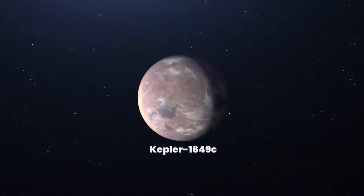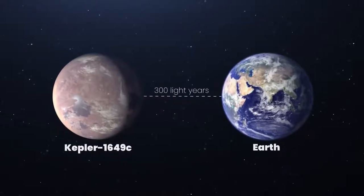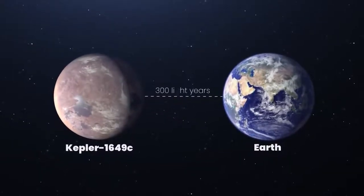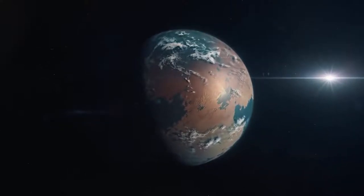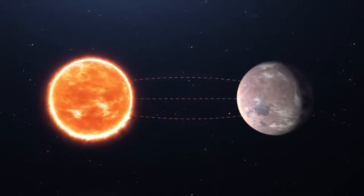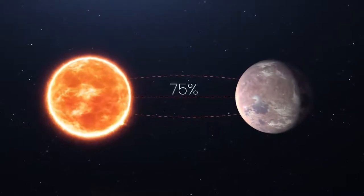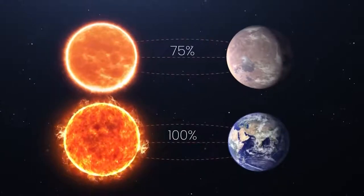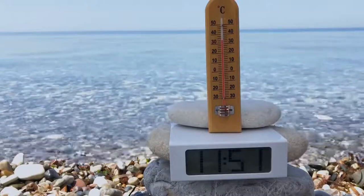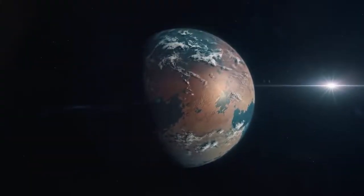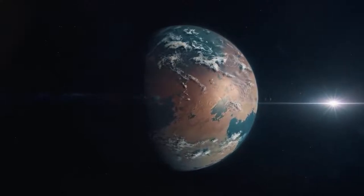Kepler-1649c, located 300 light-years from Earth, is very similar to Earth in size and estimated temperature. This newly revealed world is only 1.06 times larger than our own planet. Also, the amount of starlight it receives from its host star, which is also a red dwarf, is 75% of the amount of light Earth receives from our sun, meaning the exoplanet's temperature may be similar to our planet's as well. Kepler-1649c provides yet another example of an Earth-sized planet in the habitable zone of a red dwarf star.